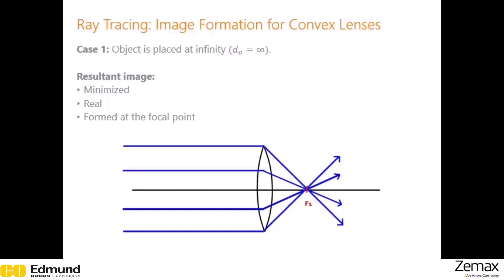Case one: the object is placed infinitely far away. In this case, all rays will be coming in parallel to the lens approximately, so they'll all be focused to approximately the focal point of the lens. The resulting image is minimized, it's a real image — meaning I can see the rays converging without any extra backward ray tracing — and it's formed at the focal point. In this case, the focal plane and the image plane are exactly the same, which is only true for very far objects.